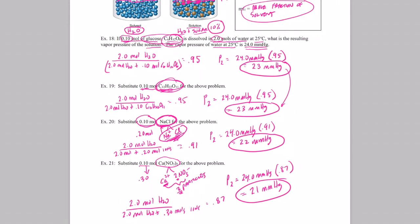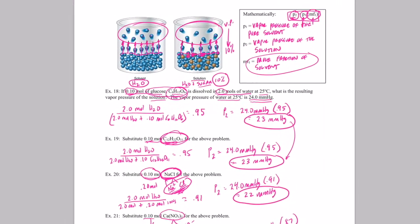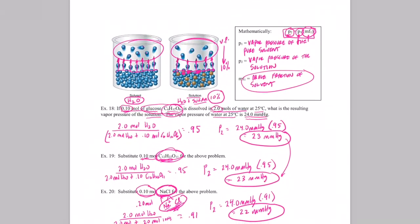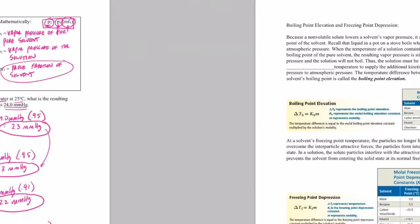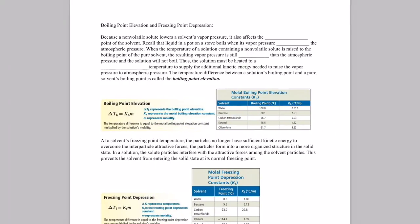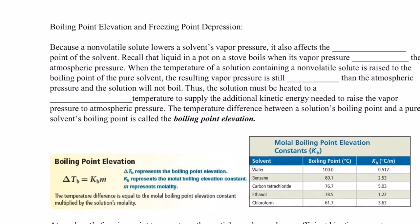Now we're going to apply this vapor pressure lowering to our next colligative properties: boiling point elevation and freezing point depression. We'll talk about those in the next video — see you soon!